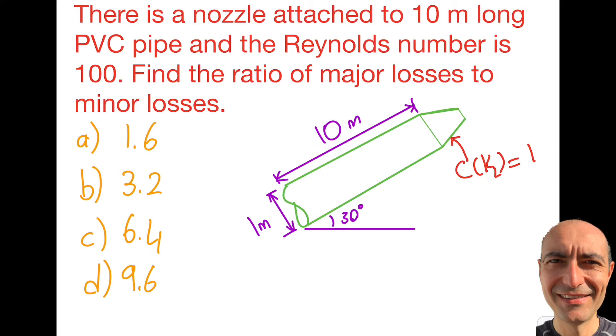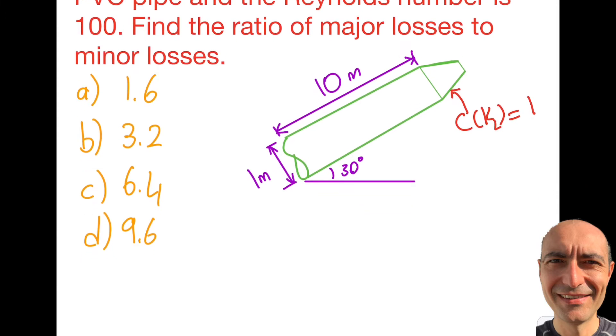Here's what the question is asking me: Find the ratio of major losses to minor losses. So basically I'm asking you major losses to minor losses, this ratio is being asked to you.